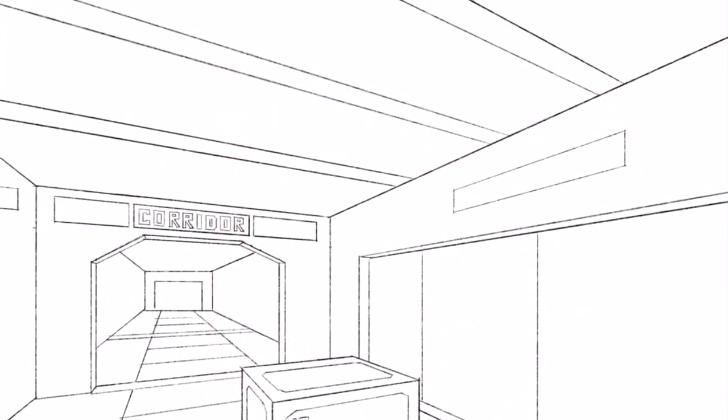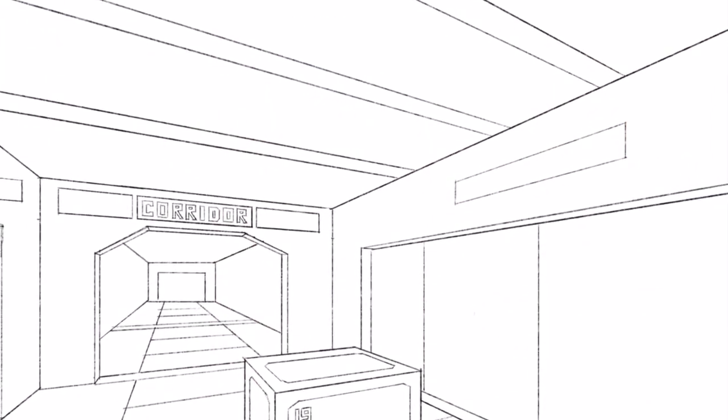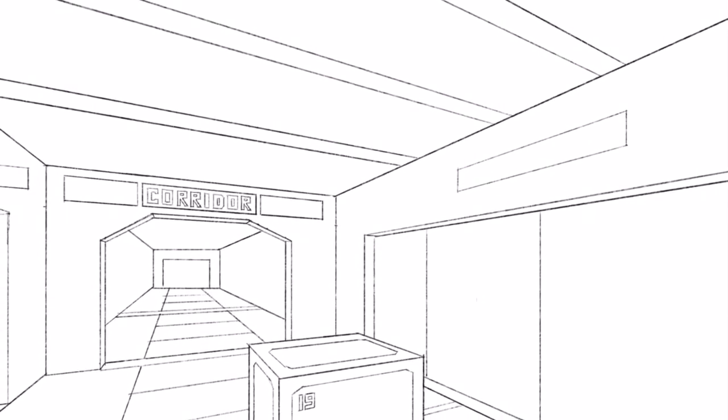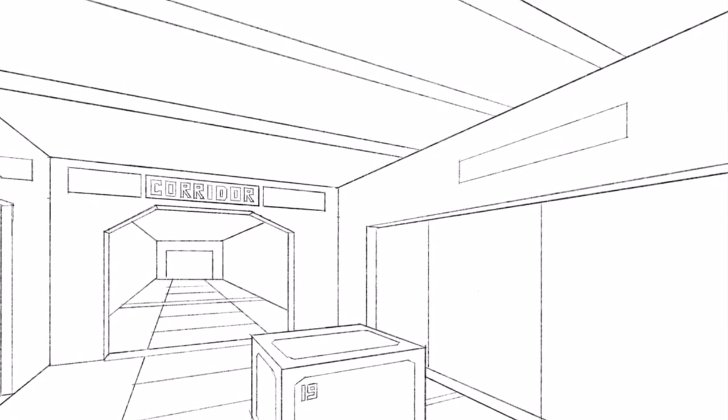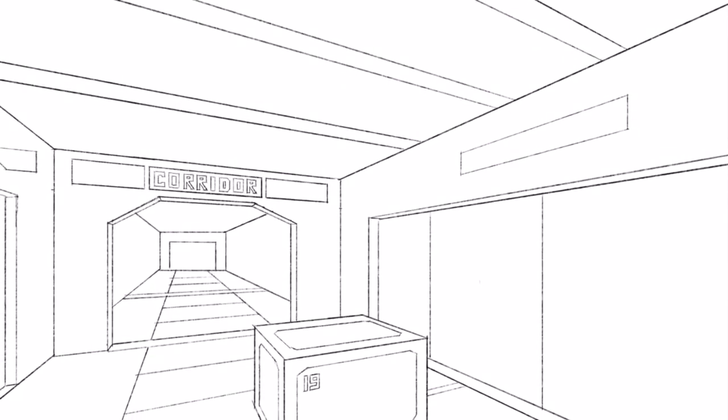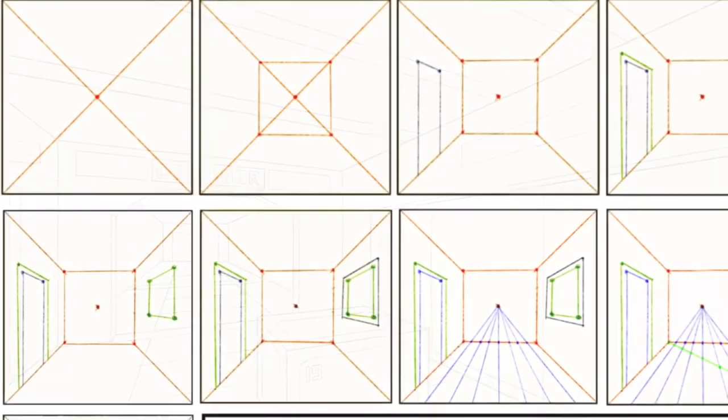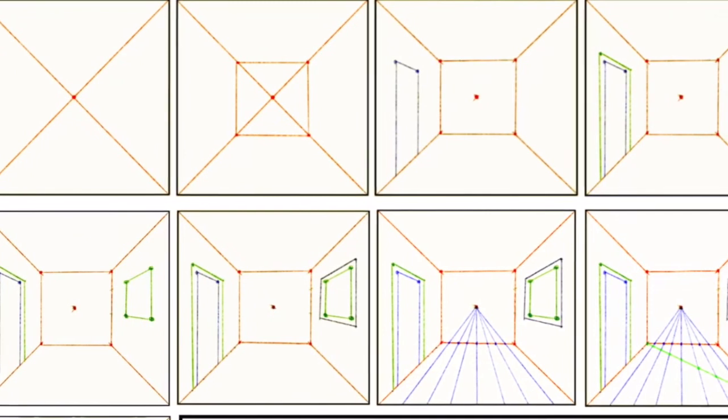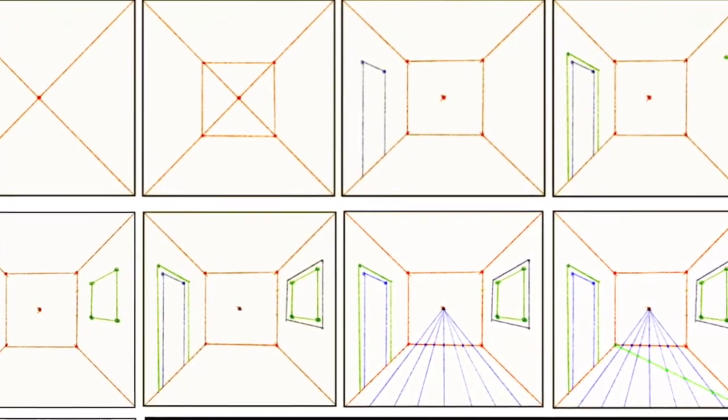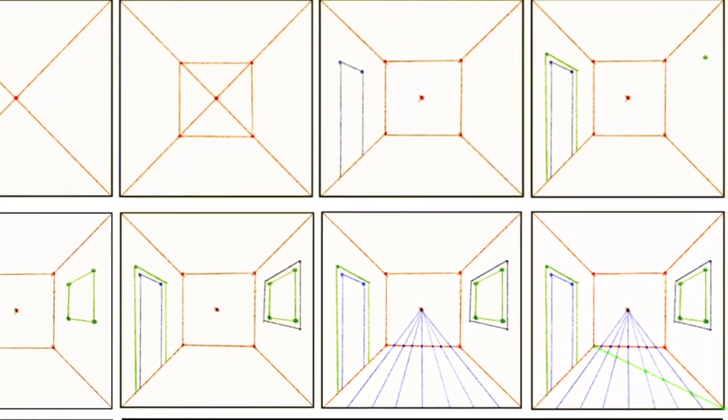Next, draw in the setting of your story using one or two point linear perspective. Include details that help inform the reader where the story is actually happening. If you're not sure how to accomplish one or two point perspective, I suggest you refer back to my previous lessons on linear perspective for help. Thanks for your time.